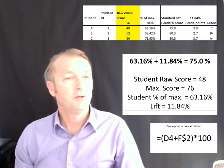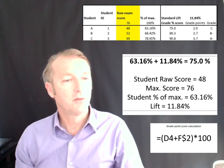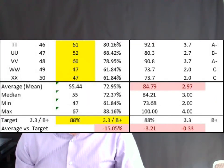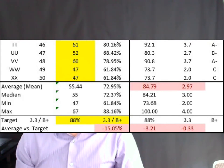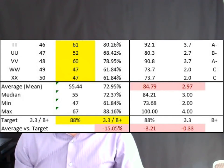I do that for all the students. Looking at the calculation, the mean went up but only to 84.79 with this standard lift score. That is still about 3.2% lower than we need. So the standard curving doesn't work in this instance — we still need to compensate for that.